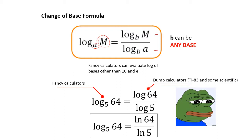You can test this out if you want — type into your calculator: this statement right here and this statement right here, they're equivalent. The reason is that ultimately all they are are ratios of different logarithms. Certainly log of 64 does not equal ln of 64 — they absolutely don't. But the ratio of log 64 to log 5 is the same as the ratio of ln 64 to ln 5. And so that's why they're the same.